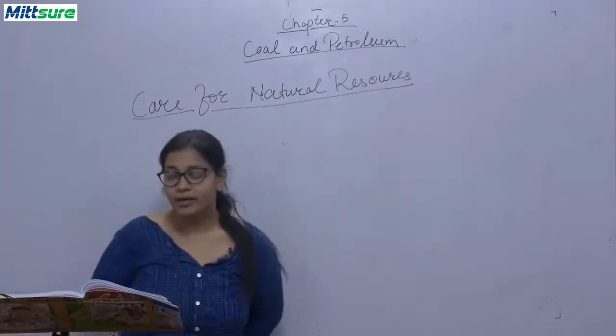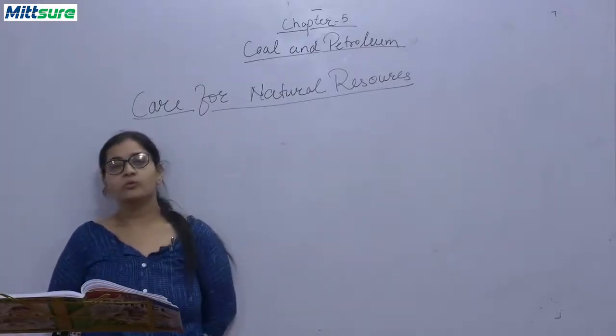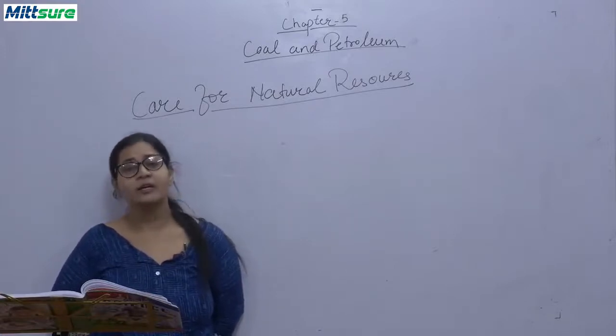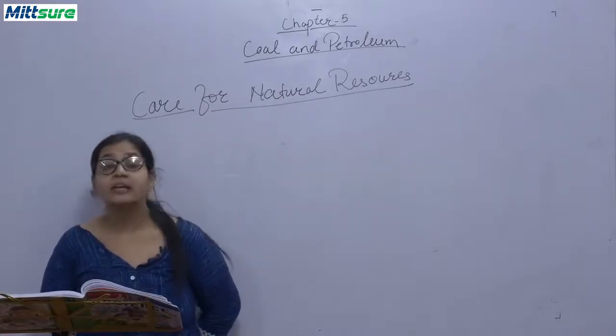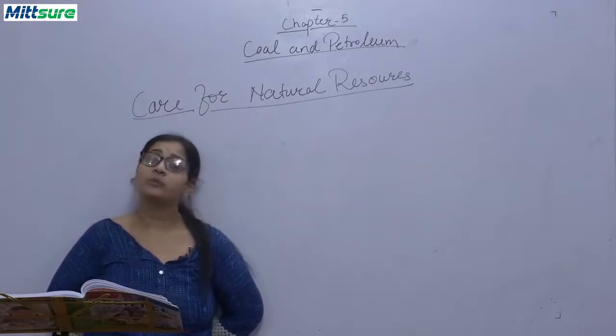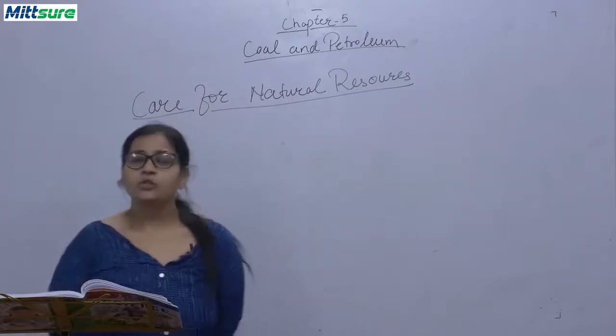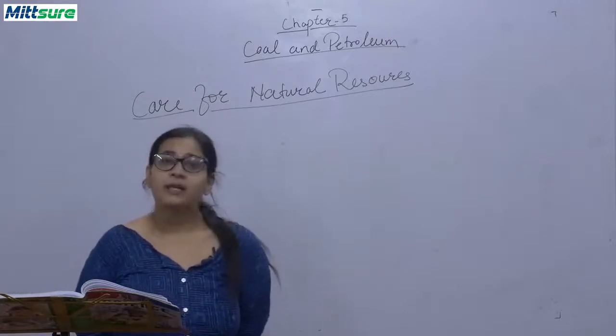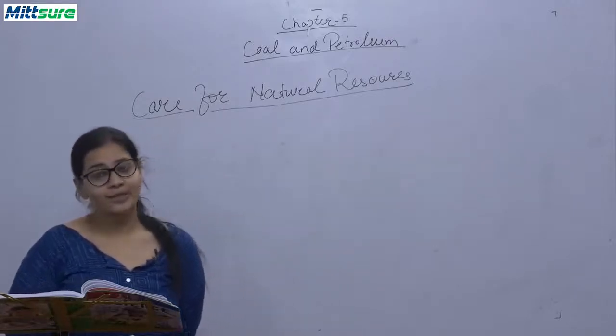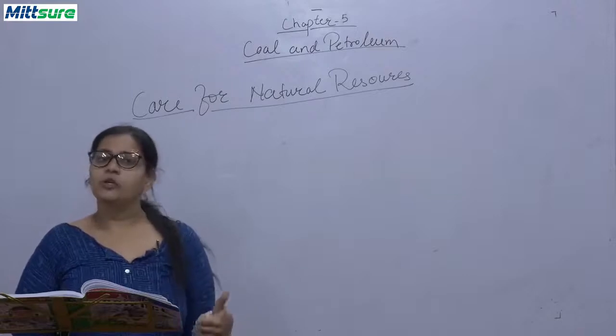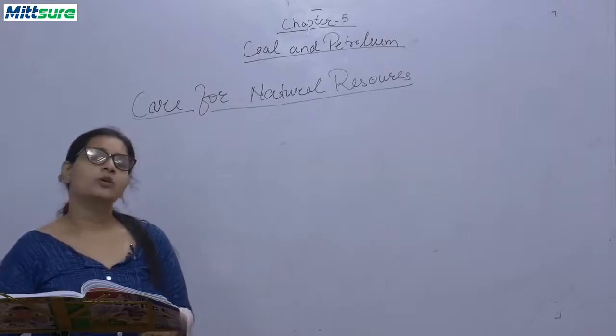Or alternative resources, like solar energy should be used, or wind energy should be used for driving energy from them. Electricity can also be produced using solar and wind. Short distance can be traveled by bicycle, or you can go by foot only. We should not waste energy. Suppose you are not using, you are in a room, and you have to go there for five minutes or ten minutes. You should have a practice of switching off the lights, or fans.